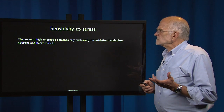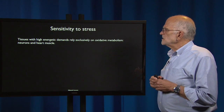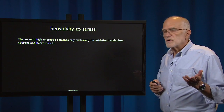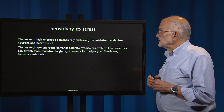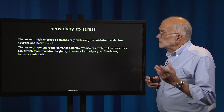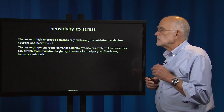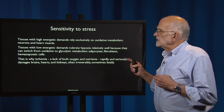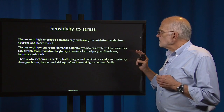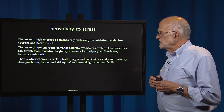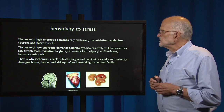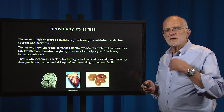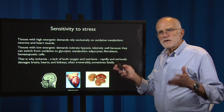What about sensitivity to stress? Tissues with high energetic demands rely exclusively on oxidative metabolism — so that would be neurons and heart muscle. Tissues with low energetic demands tolerate hypoxia relatively well because they can switch from oxidative to glycolytic metabolism — that would be adipocytes, fibroblasts, and hematopoietic cells. That's why ischemia, the lack of oxygen and nutrients, rapidly and seriously damages brains, hearts, and kidneys, often irreversibly and sometimes fatally. These are the tissues that really need oxygen and are prioritized by our circulatory system to keep them going when oxygen levels drop.